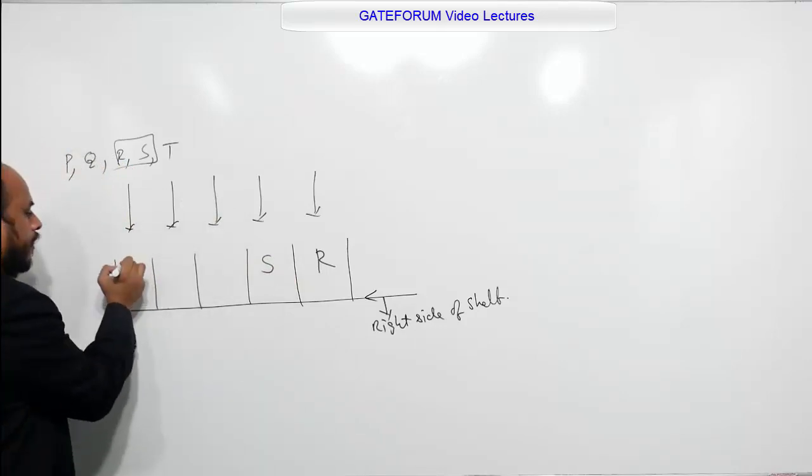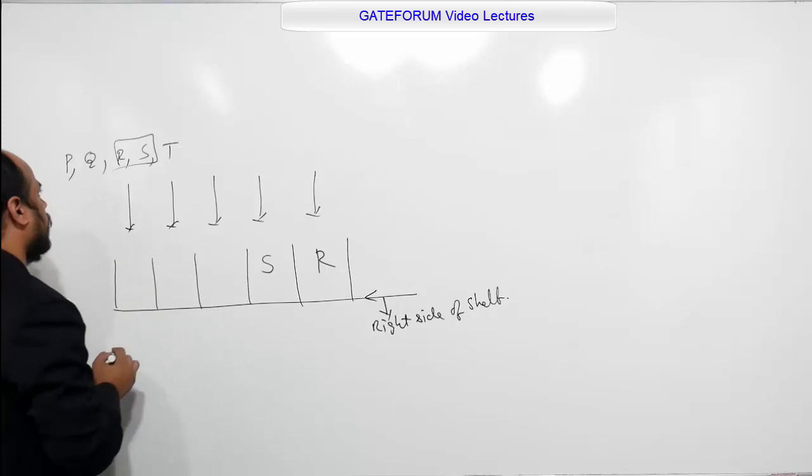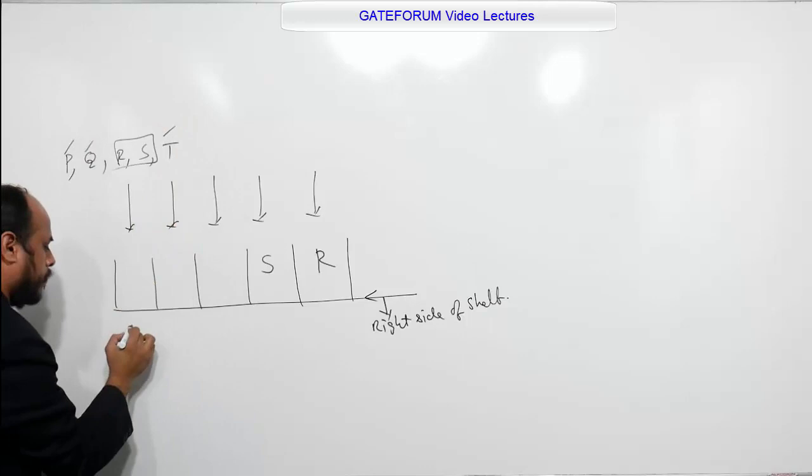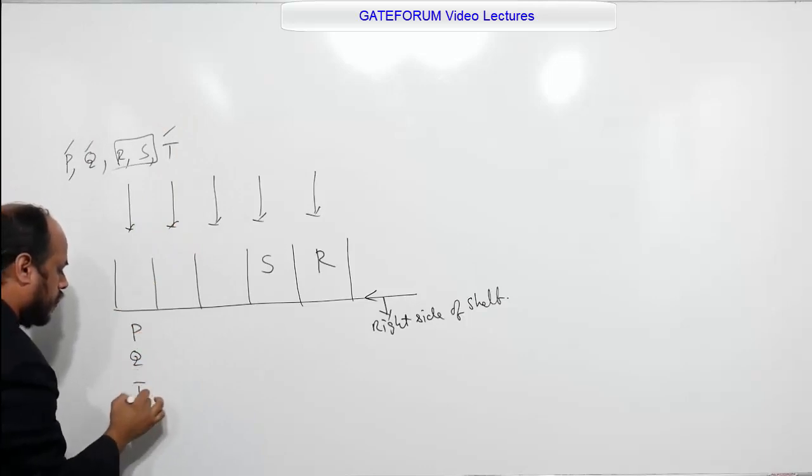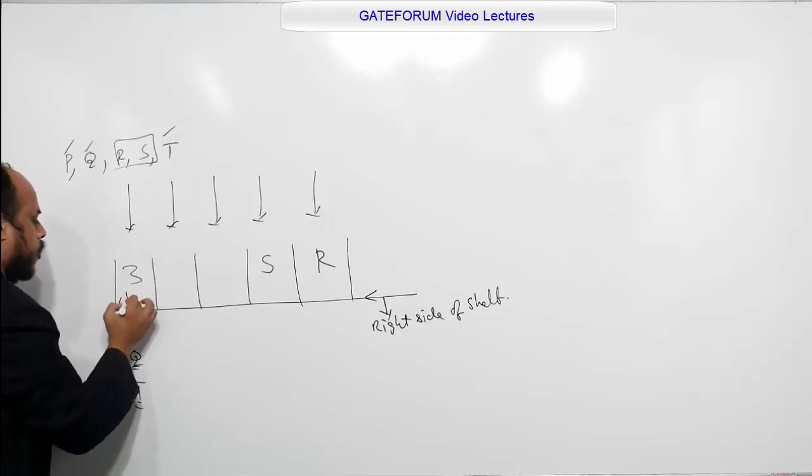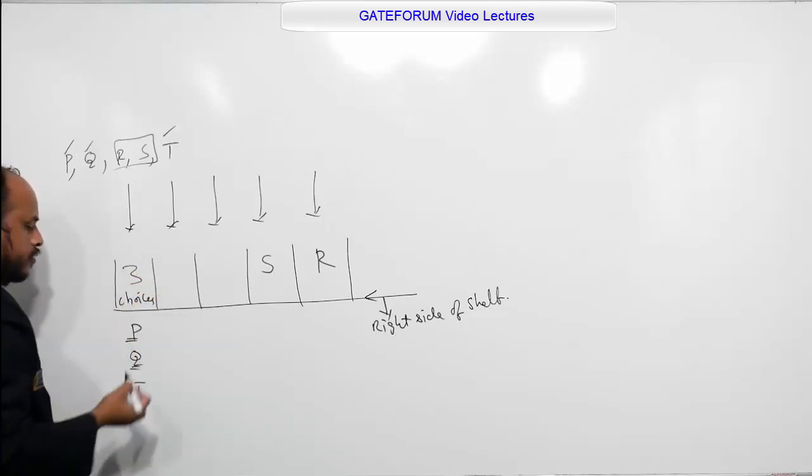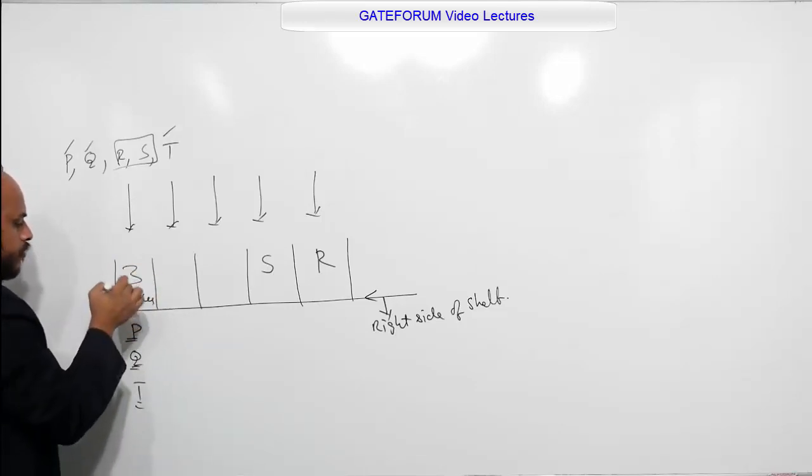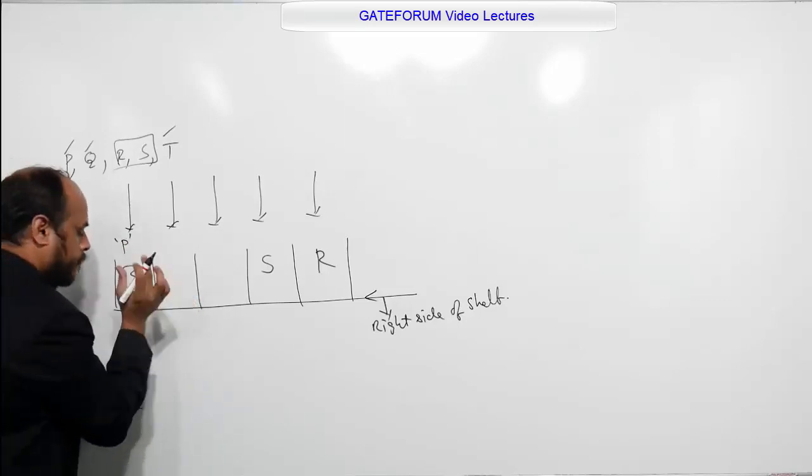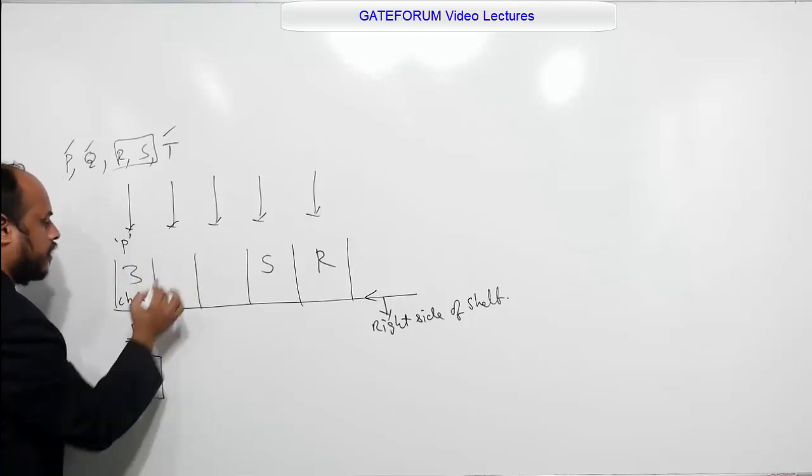Now, to fill this position, we have three choices. What are they? You can fill this position either by P, or by Q, or by T. So you can fill any one of these books. We have three choices. Suppose we are assuming here, I am filling here by P. Now, to fill the second position here, I have two choices only, either Q or T.